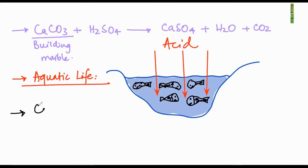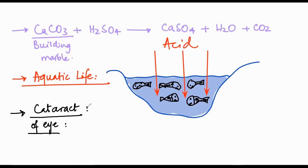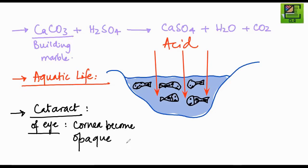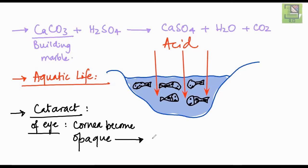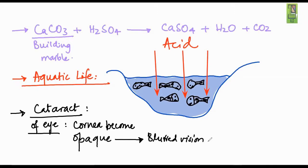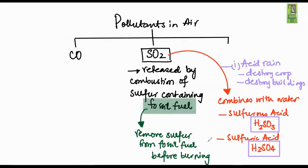Acid can also cause a disease called cataract — a disease of the eye in which the cornea, the transparent front-most layer, becomes opaque. A person suffering from cataract will have blurred vision, and if not properly treated, vision can eventually be lost in one or both eyes.